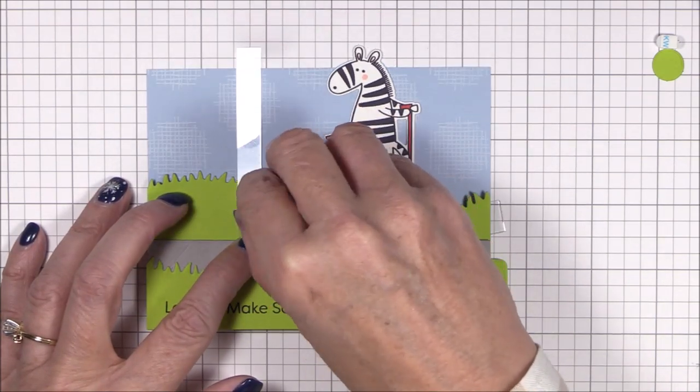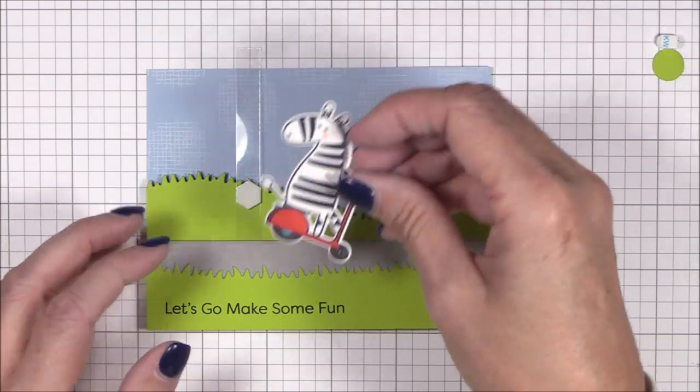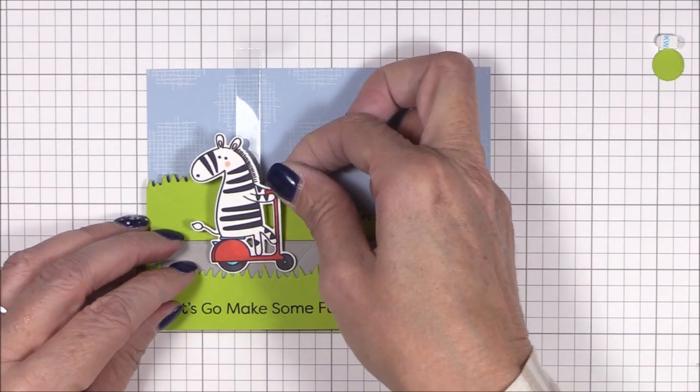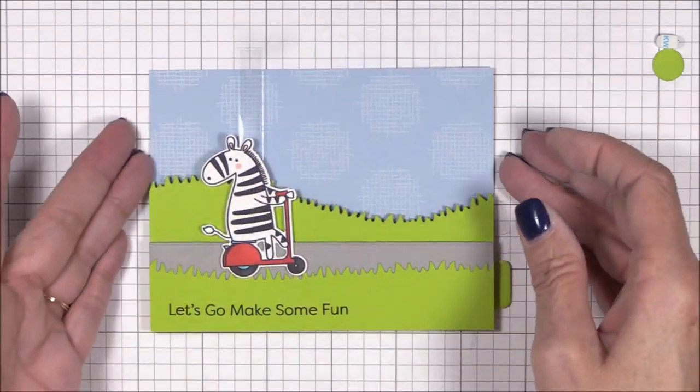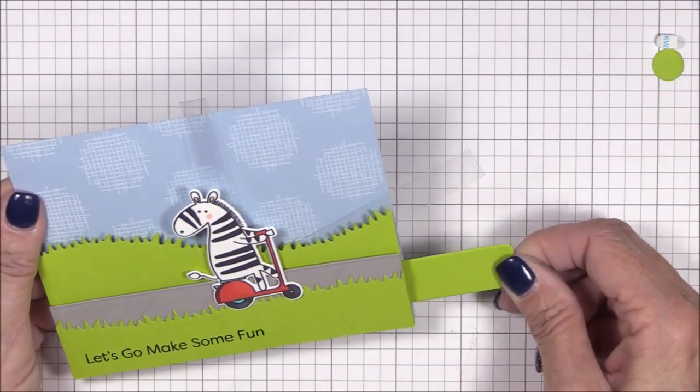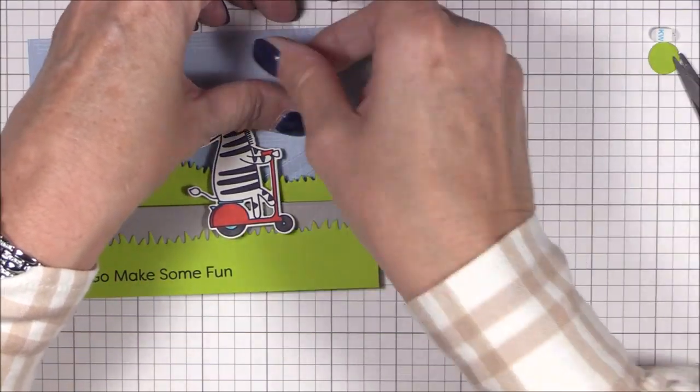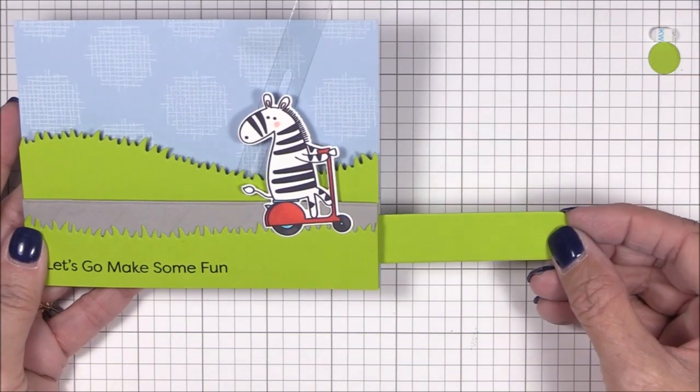I stamped, colored, and die cut my scooter zebra off-camera and I'm adhering him to that acetate strip with a foam square. And a test run of the mechanism shows that everything is working so far. But I like the positioning of my zebra, so I feel comfortable trimming off the excess acetate from the strip.